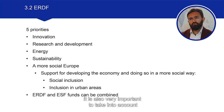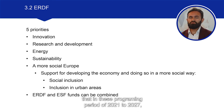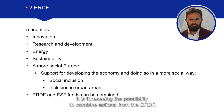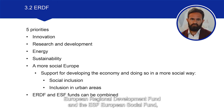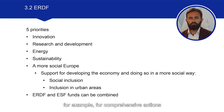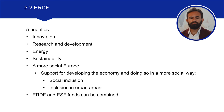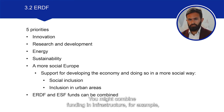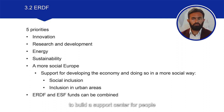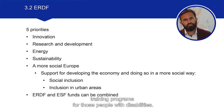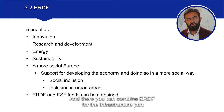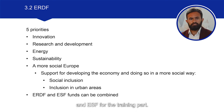It is also very important to note that in this programming period of 2021 to 2027, it is foreseen that actions from the ERDF and the ESF can be combined — for example, for comprehensive actions that provide support from multiple perspectives. An example would be combining funding in infrastructure to build a support center for people with disabilities, while at the same time providing training programs for those people. There you can combine ERDF for the infrastructure part and ESF for the training part.